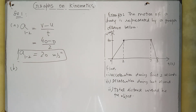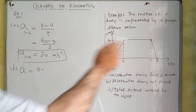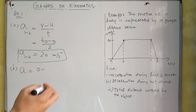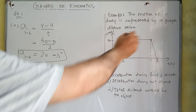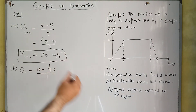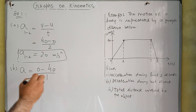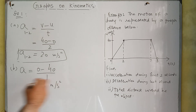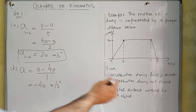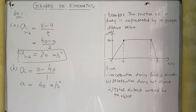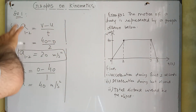In the second part, we need to find deceleration during the last second. Using the same formula: final velocity minus initial velocity divided by time. During the last second, final velocity is 0 meters per second, initial velocity was 40 meters per second, and time is 1 second. So acceleration equals 0 minus 40 over 1, which is minus 40 meters per second squared. Since it is deceleration, we write the magnitude as 40 meters per second squared.